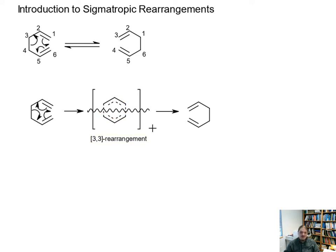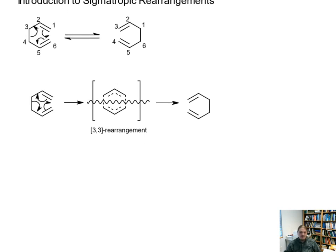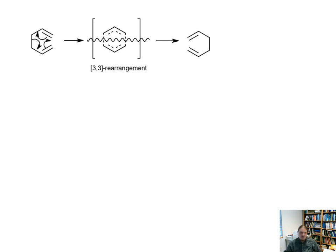And this [3,3] kind of nomenclature is going to be used to describe other kinds of rearrangements. And it's worth noting that this [3,3] kind of rearrangement is a really common rearrangement. There are other kinds of rearrangements.